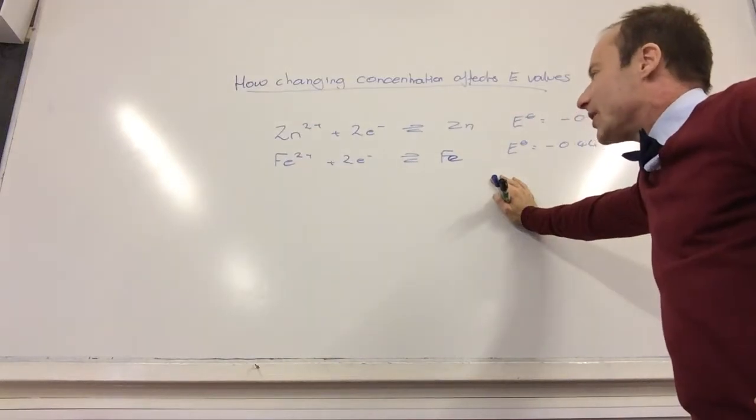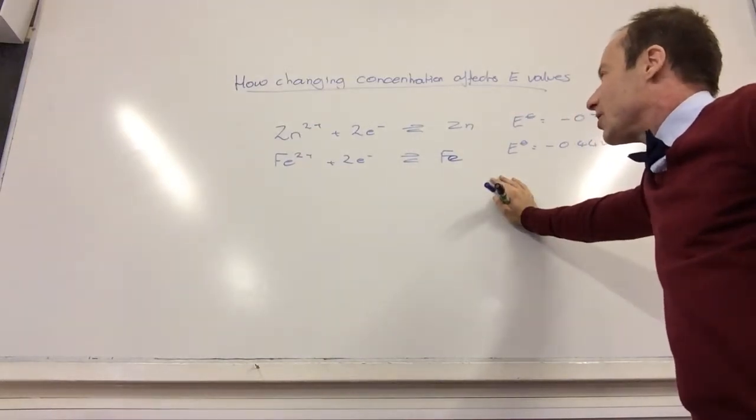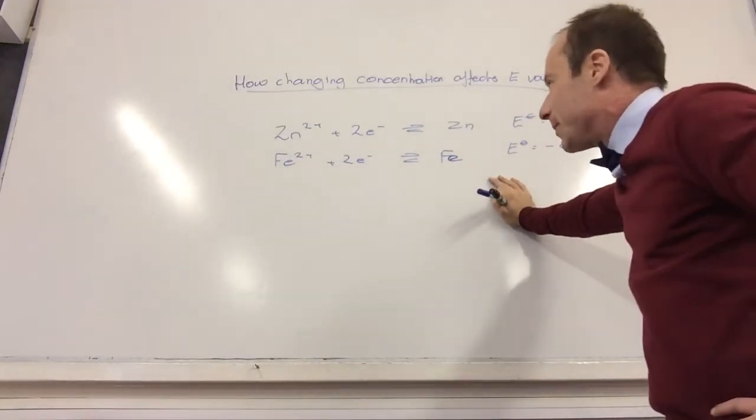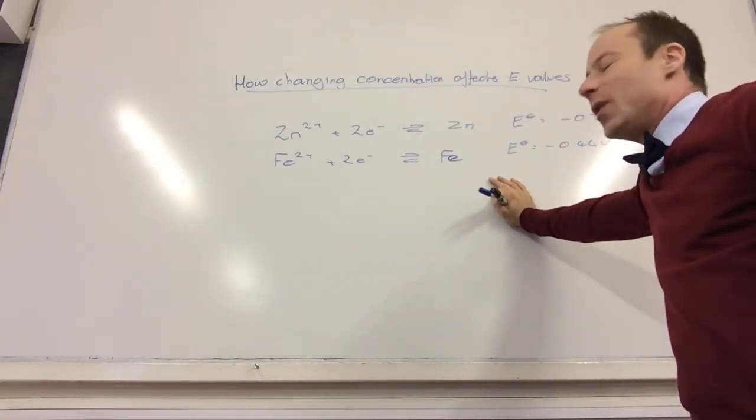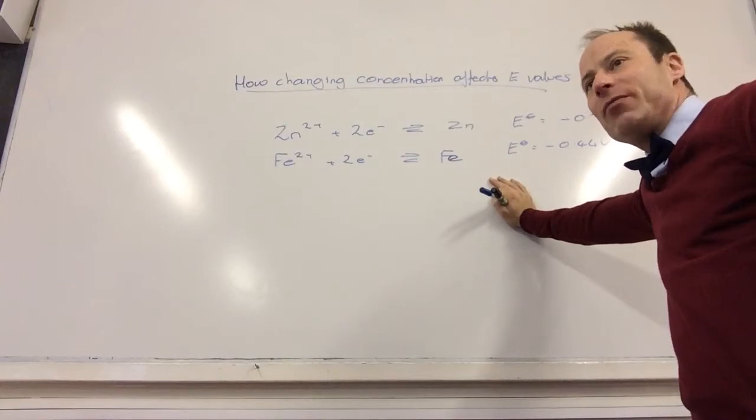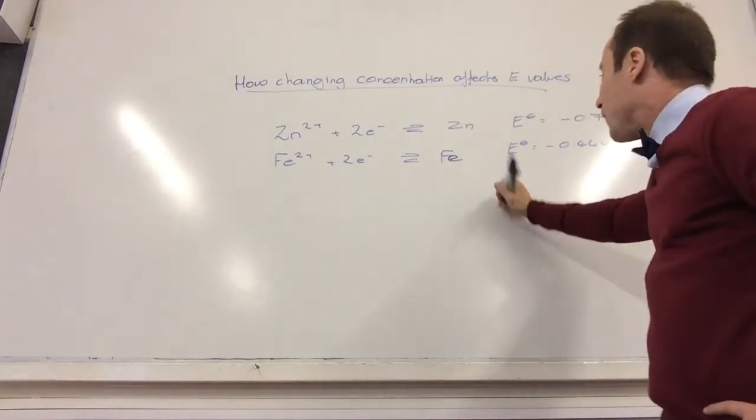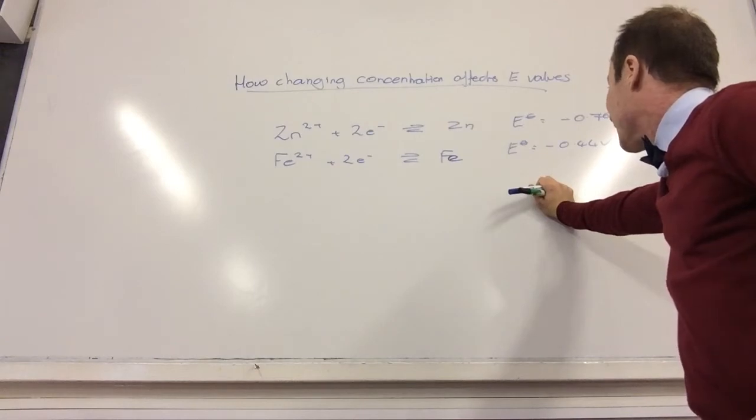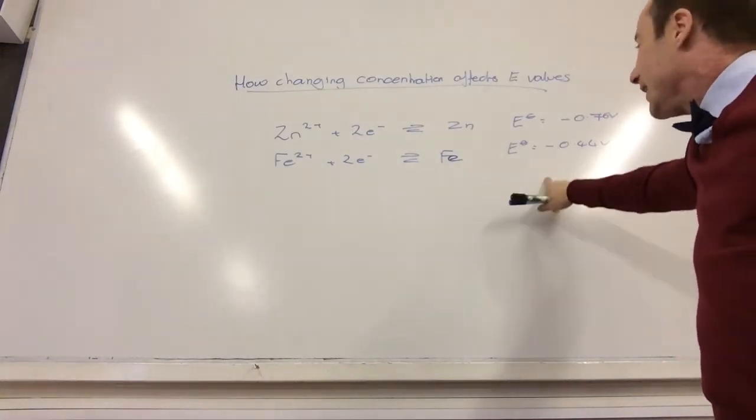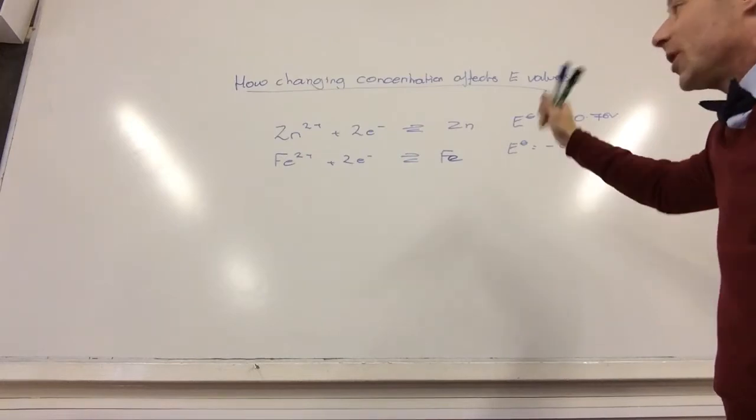We've got zinc being reduced to zinc metal and iron 2+ being reduced to iron metal. Both are showing reductions. The first one has an electropotential of minus 0.76 volts and the iron has one of minus 0.44 volts.